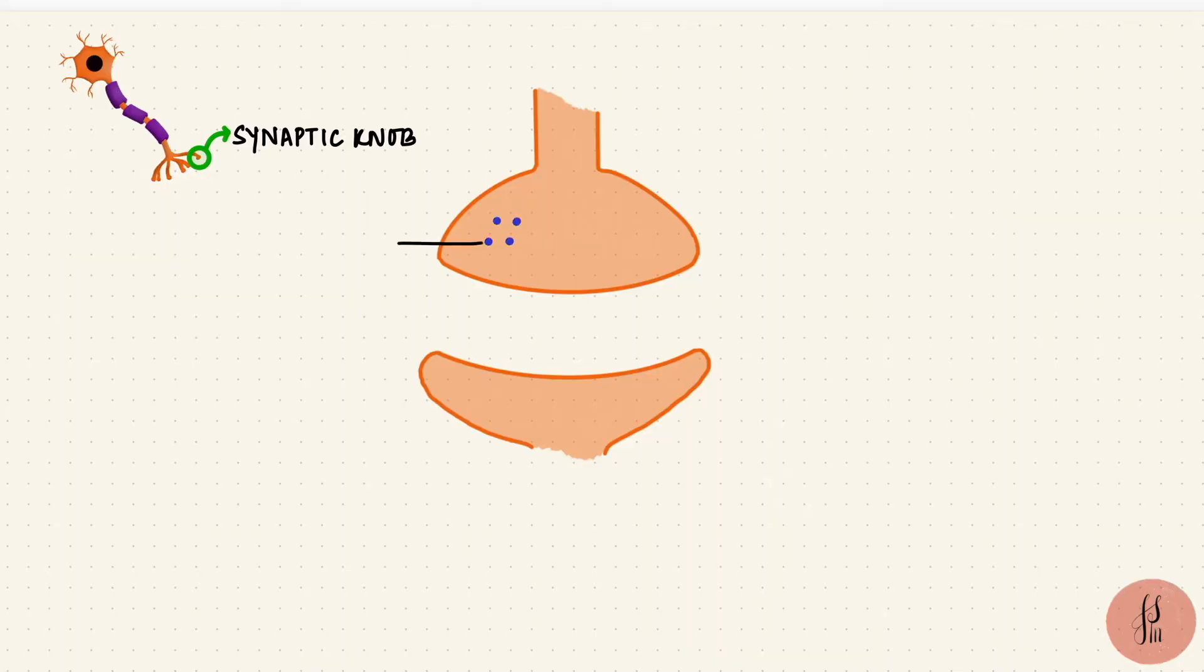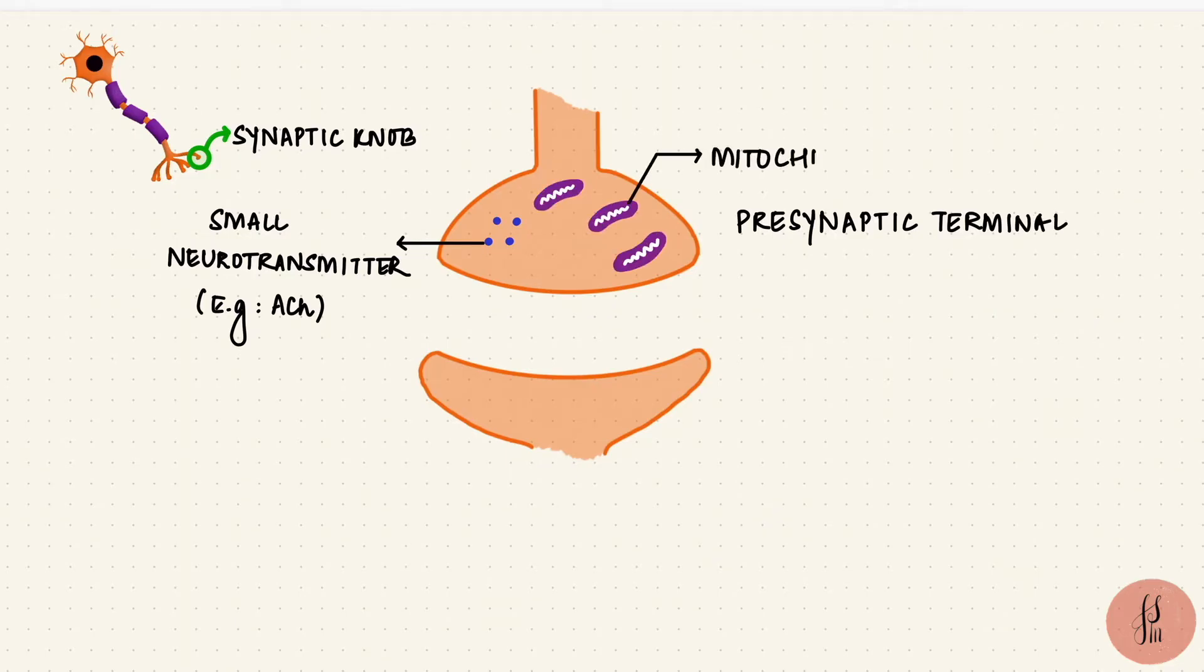Small neurotransmitters, like acetylcholine, are formed in the pre-synaptic terminal itself. That's why they have mitochondria, energy for synthesis of the neurotransmitter. They get packaged in vesicles, which are going to get released when the nerve gets stimulated. These are synaptic vesicles.